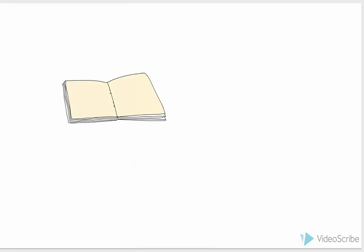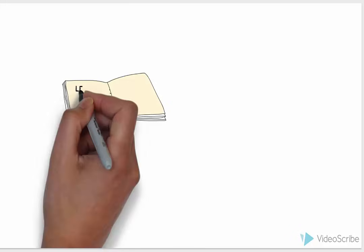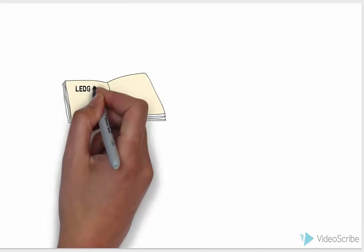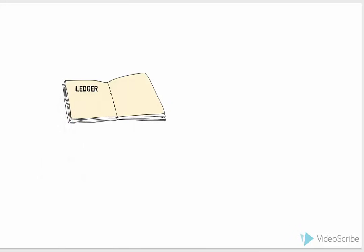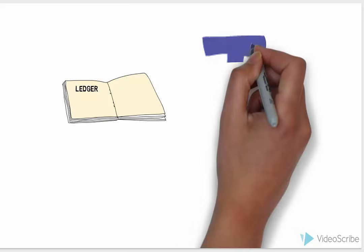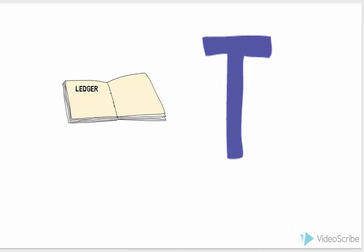When we're in accounting class, we don't always want to be super formal and take the time to do a proper general ledger. So instead we use T-accounts, and they're called T-accounts because you draw a giant T. So let's look at how this works.